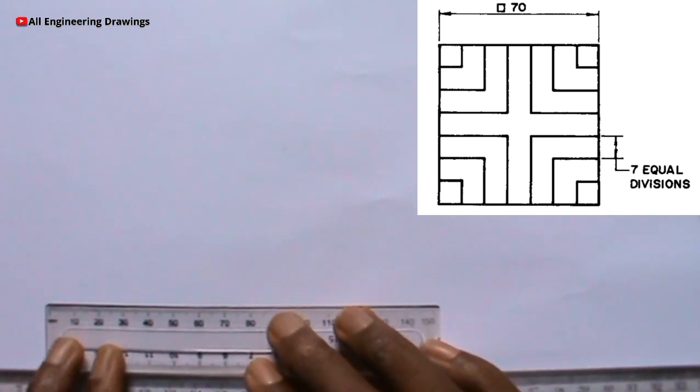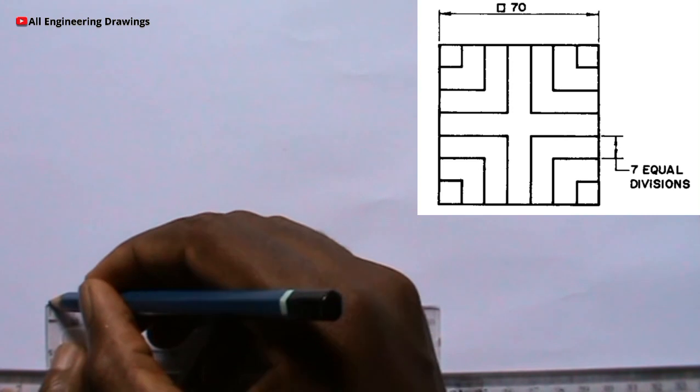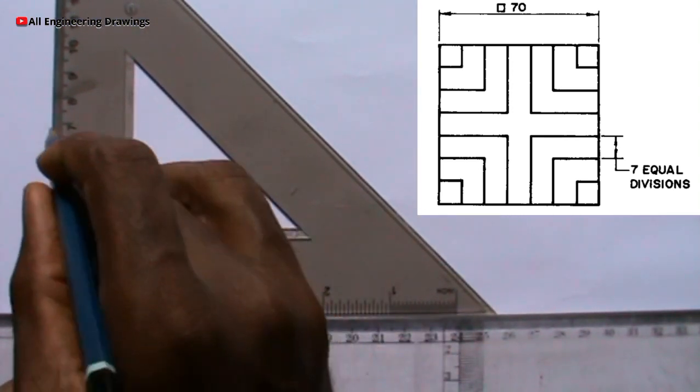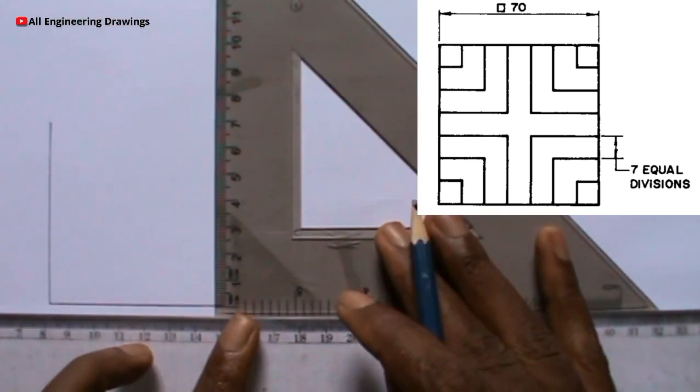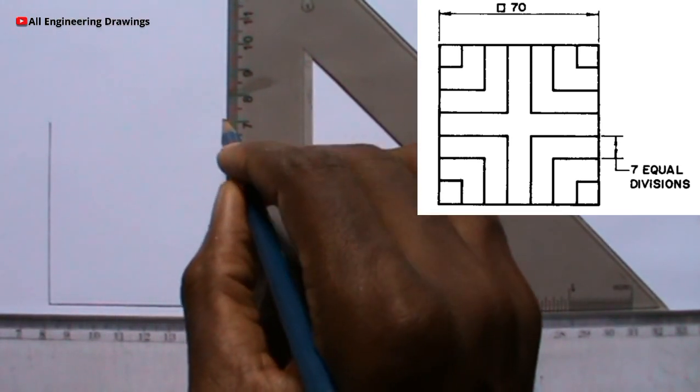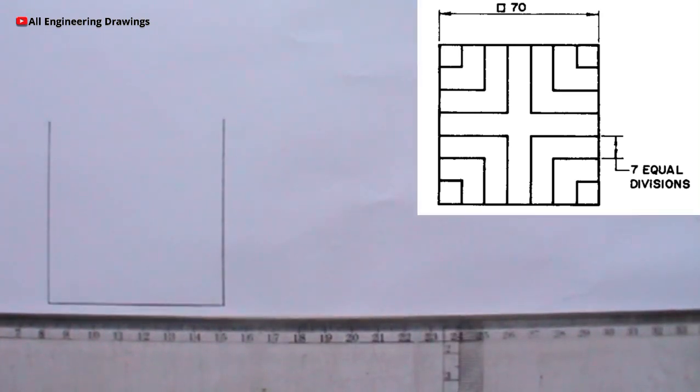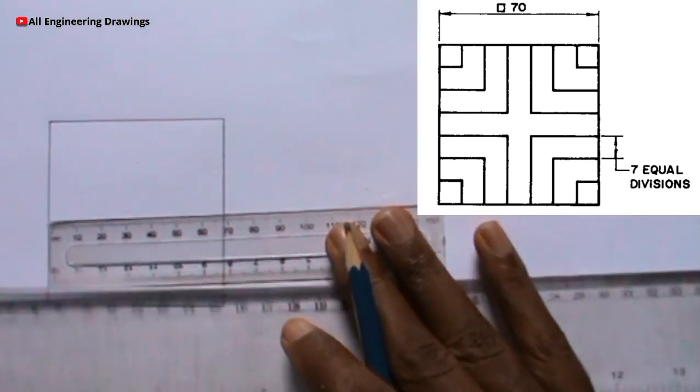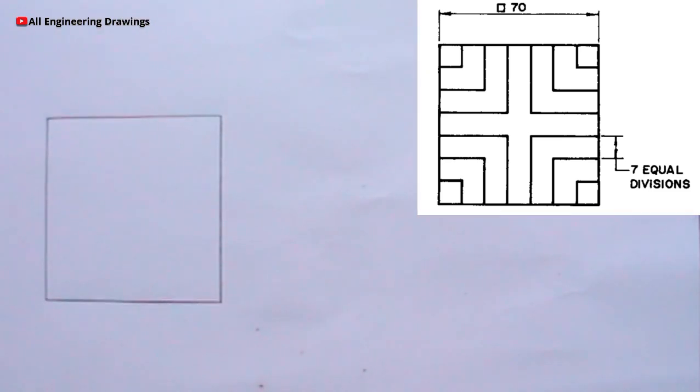So I will draw a square of sides 70mm using my ruler, T square and Z square. Now we have our square.